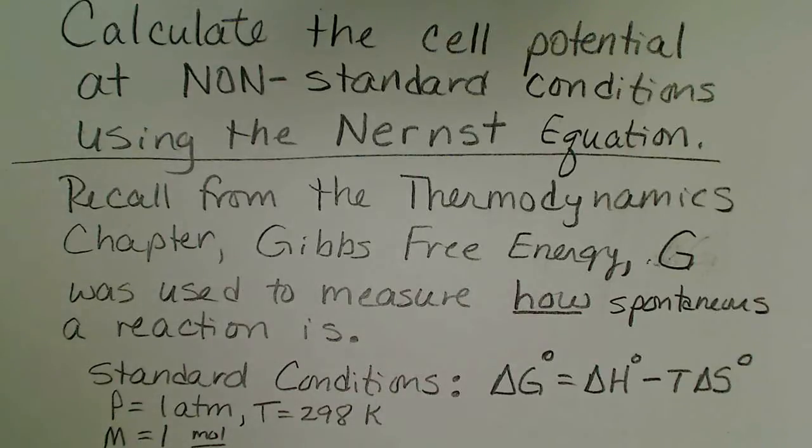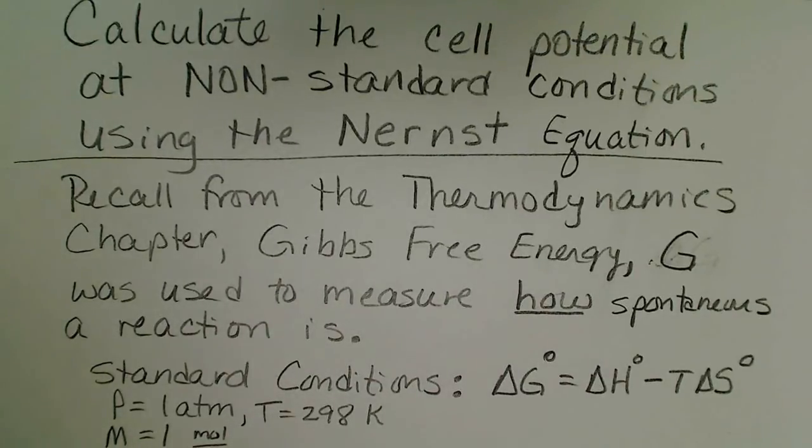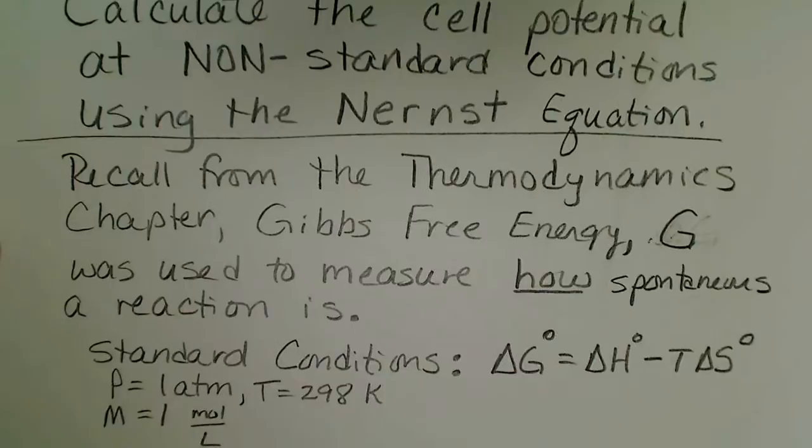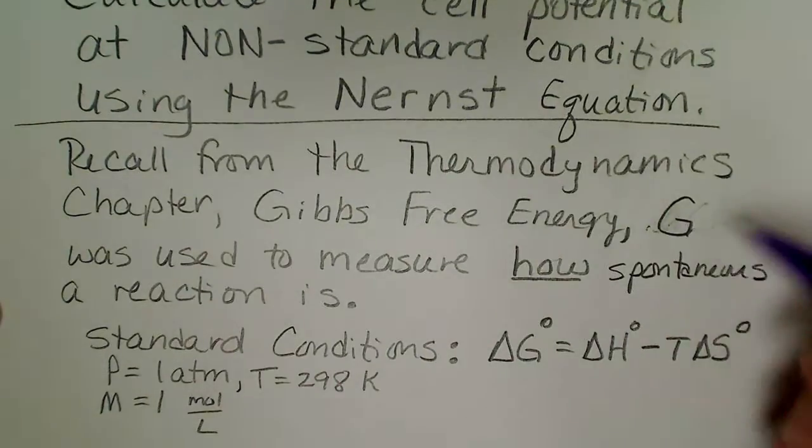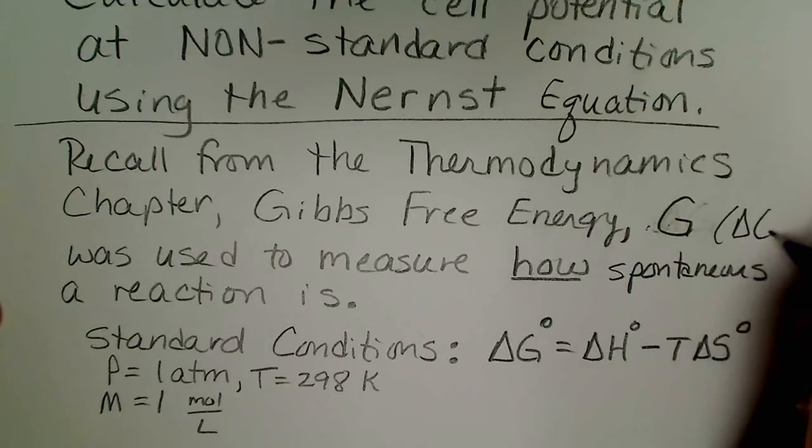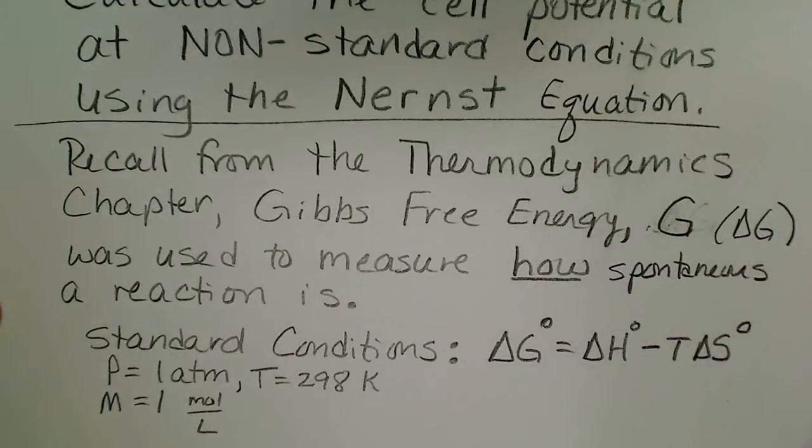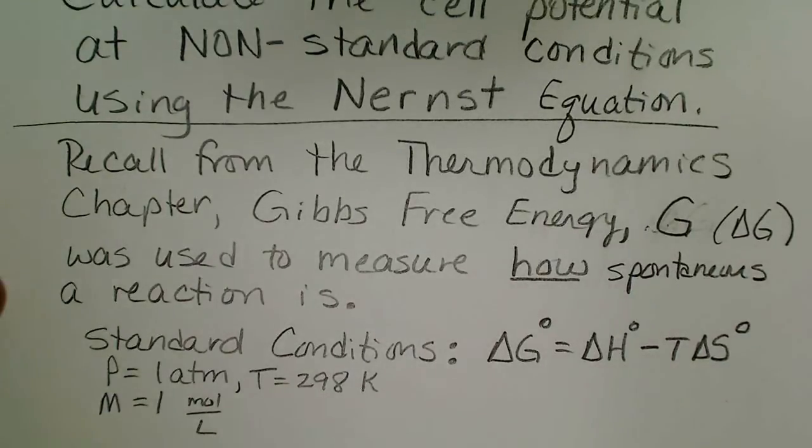In this video we are going to use the Nernst equation to calculate the cell potential at non-standard conditions. I wanted to remind us from a previous chapter in thermodynamics that we use the change in Gibbs free energy, or delta G, and that was a measure of how spontaneous a chemical reaction is.